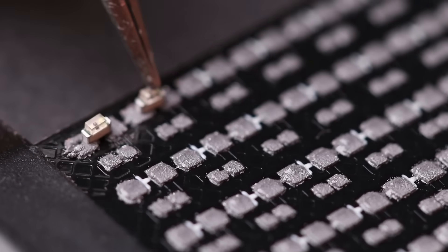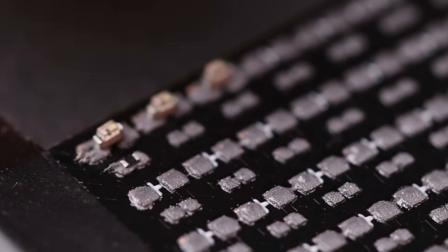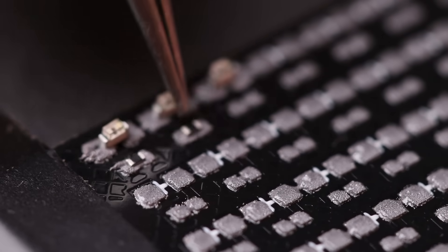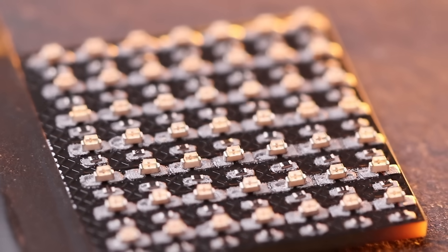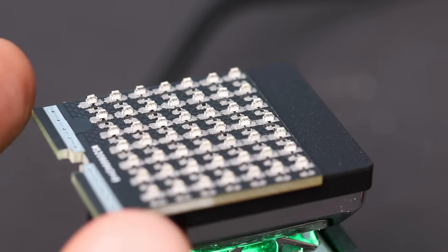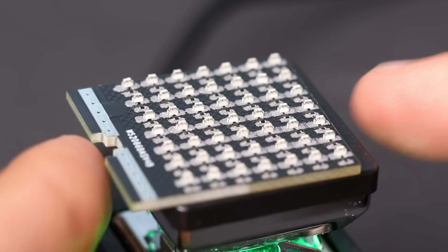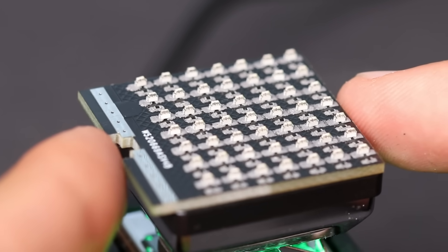So to save some time, I used a stencil to distribute another grey substance on the PCB. Then I carefully placed each component on the board with tweezers. It took me roughly 15 minutes. And after heating the board, the grey soldering paste should melt and solder components to their places.